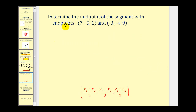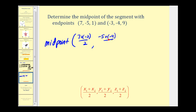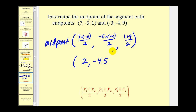Now let's find the midpoint of the segment with two given endpoints. We add the corresponding coordinates and divide each by two: x-coordinate: (7 + (−3))/2 = 4/2 = 2; y-coordinate: (−5 + (−4))/2 = −9/2 = −4.5; z-coordinate: (1 + 9)/2 = 10/2 = 5. Note that for the midpoint we add coordinates, whereas for the distance formula we subtract — so be careful about that.